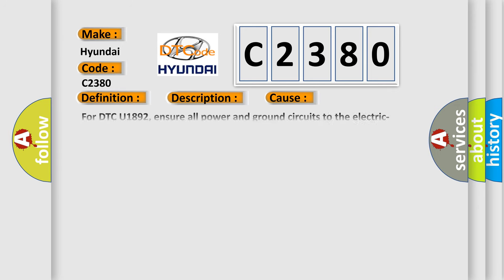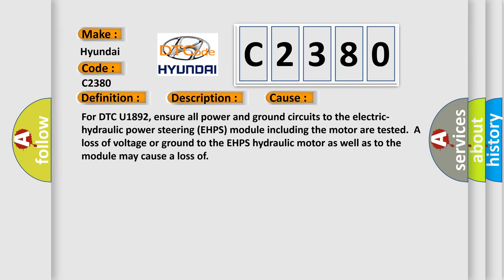This diagnostic error occurs most often in these cases: For DTC U1892, ensure all power and ground circuits to the electric hydraulic power steering EHPS module including the motor are tested. A loss of voltage or ground to the EHPS hydraulic motor as well as to the module may cause a loss of function.